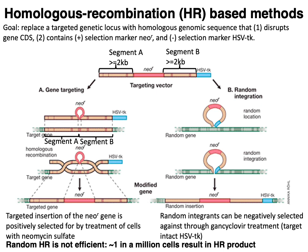Random homologous recombination is generally not efficient — typically only about one in a million cells results in a successful HR product.